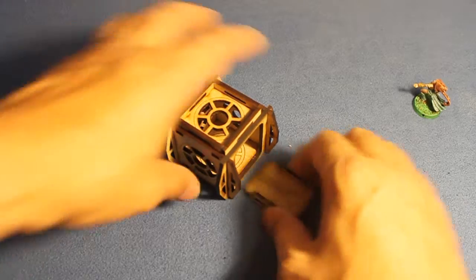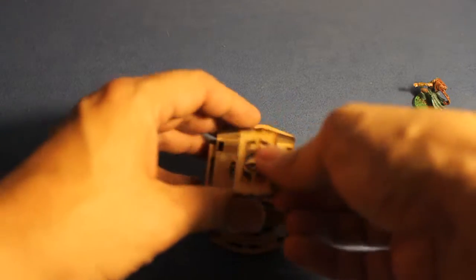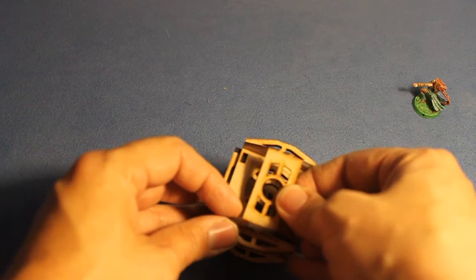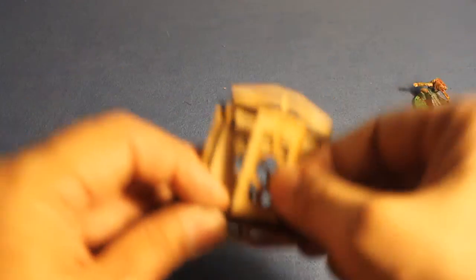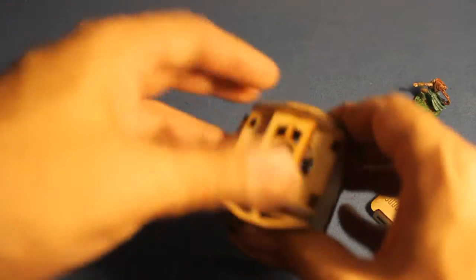Alright, now, option number two will be the guardrails. You're going to need this to secure bridges and other things. So, what you want to do is, either way, whichever one you find. And just plug that right in. A little bit of pressure. Alright. You're good.